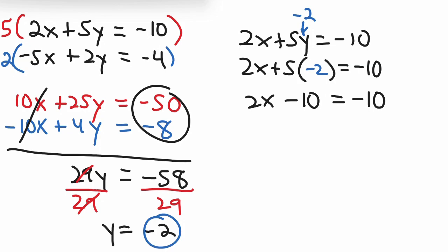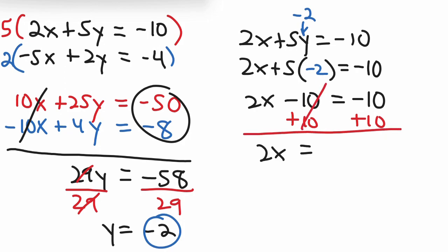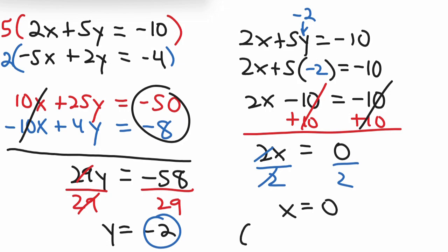Plugging in negative 2 for y: 2x plus 5 times negative 2 equals negative 10. That gives 2x minus 10 equals negative 10. Adding 10 to both sides: 2x equals 0. Dividing both sides by 2 gives x equals 0. So our ordered pair is x equals 0 and y equals negative 2.